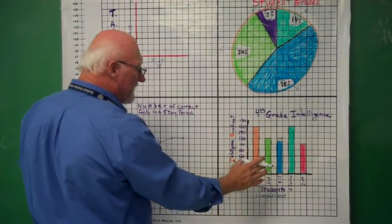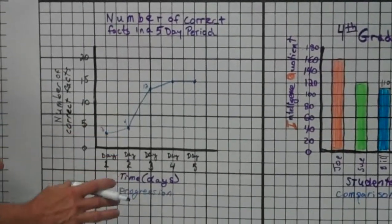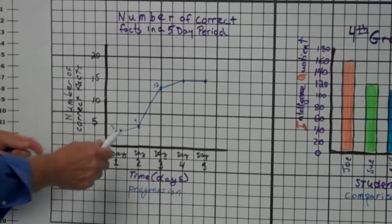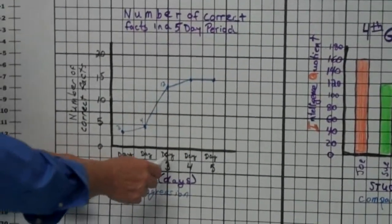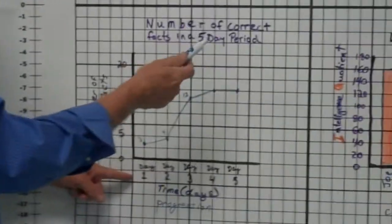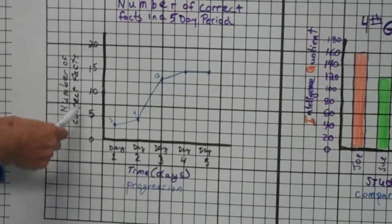So, a bar graph is commonly used to show comparison. A line graph is progression. So, here in this line graph, we have days one, two, three, four, and five. We're trying to show the number of correct facts in a five-day period.